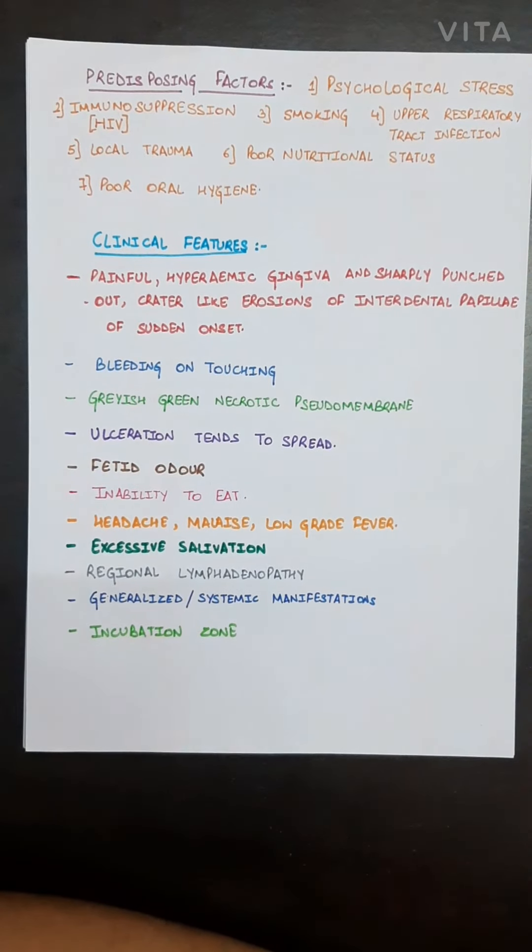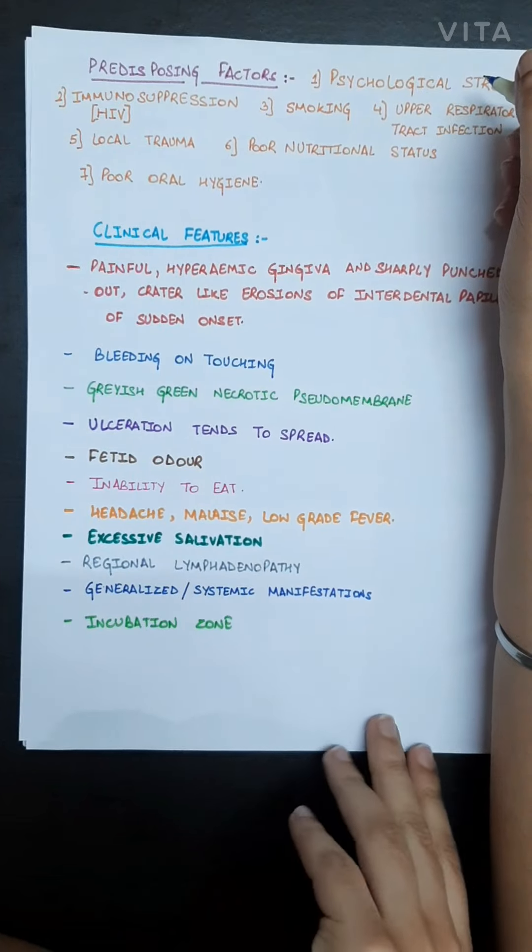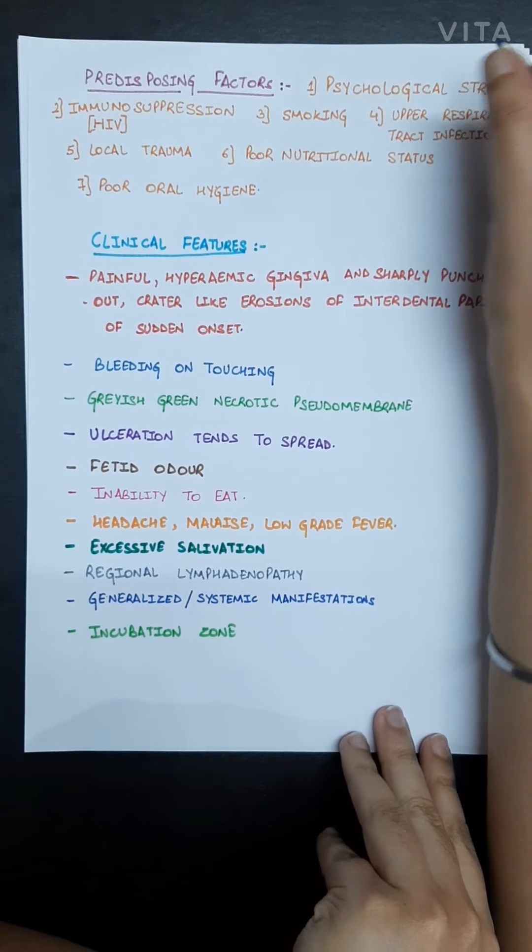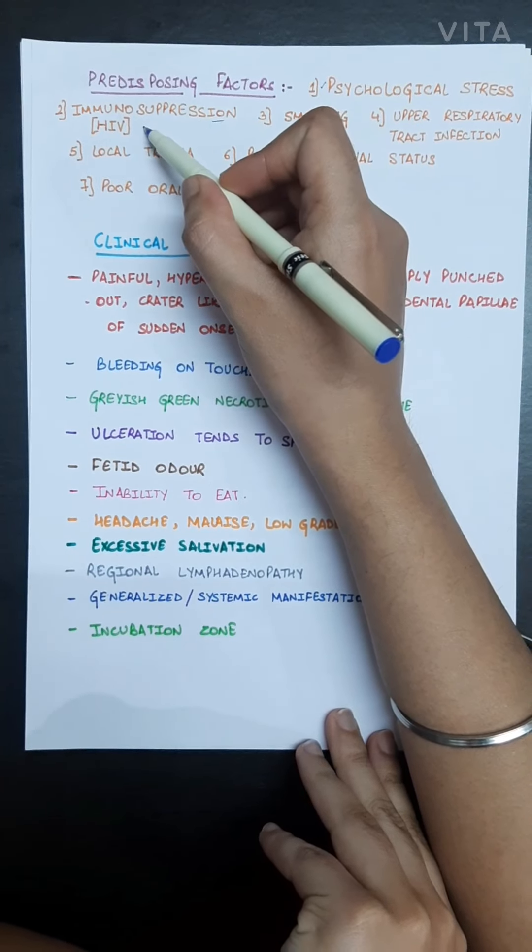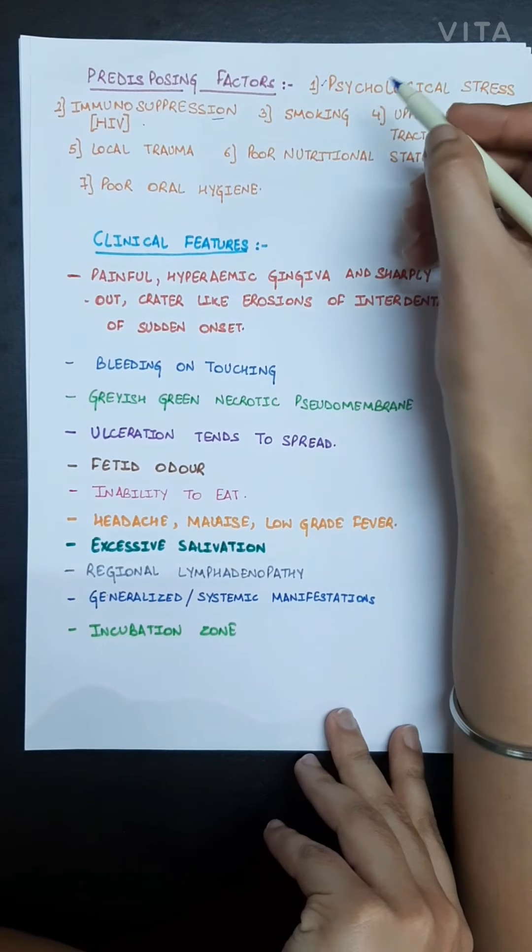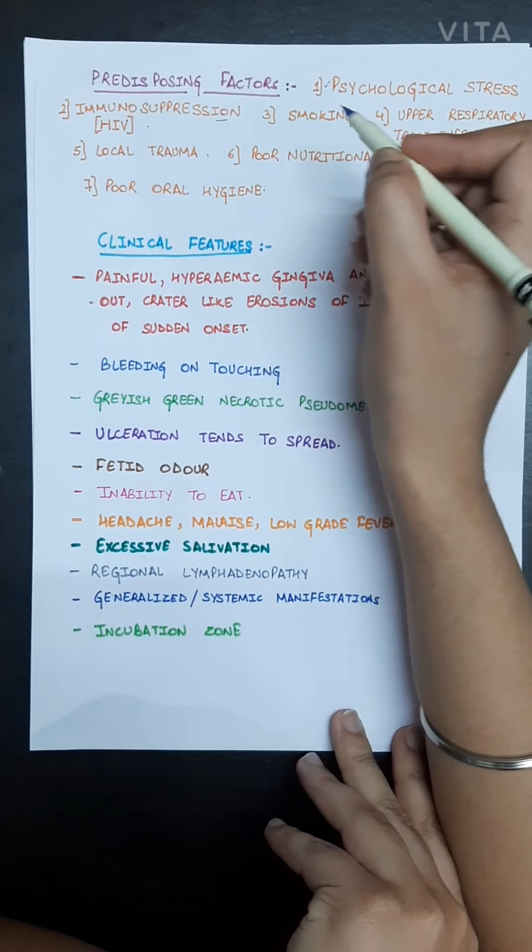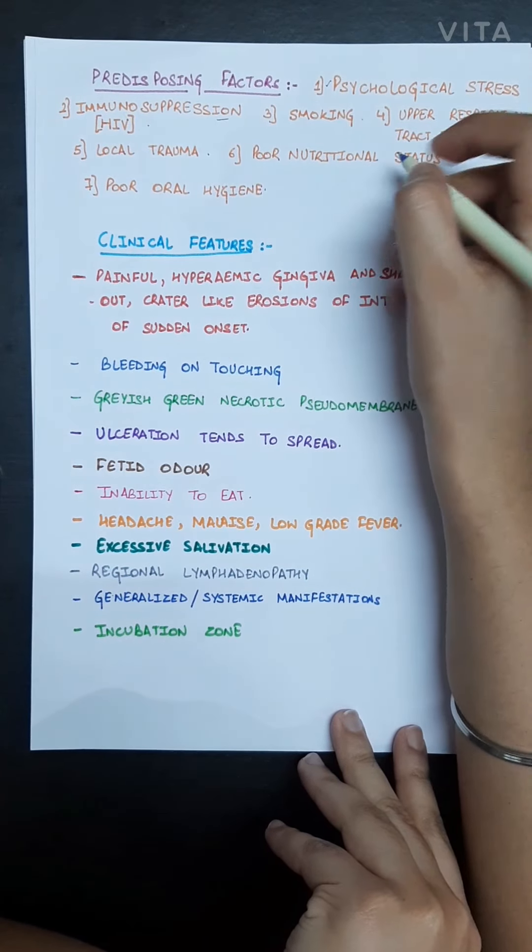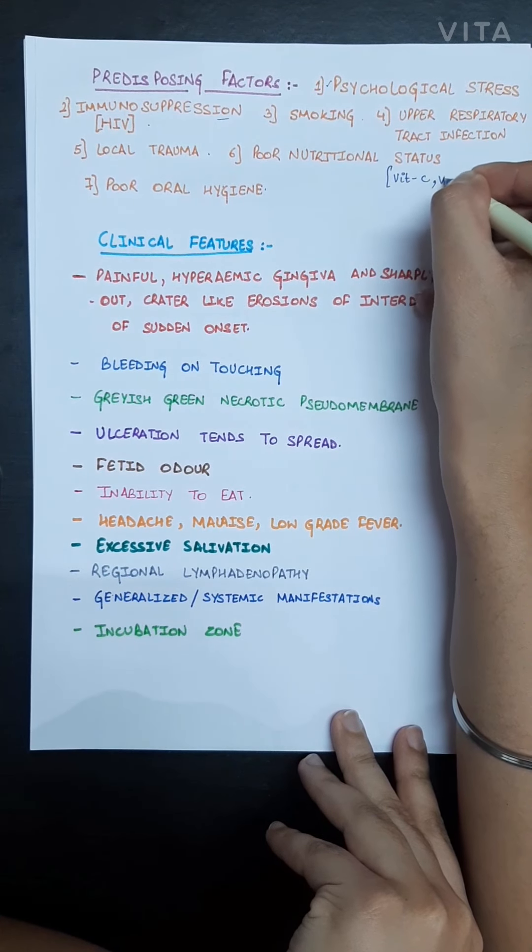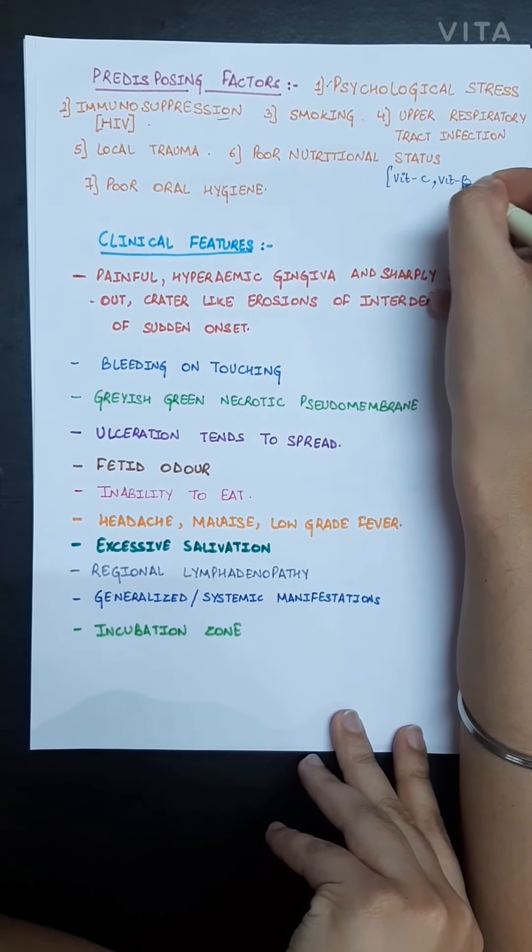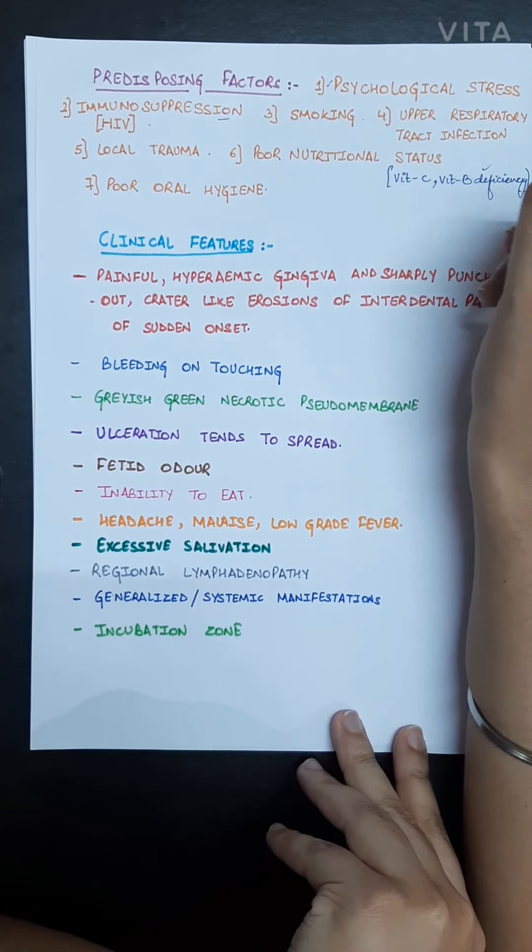Now the predisposing factors or risk factors for necrotizing ulcerative gingivitis are: psychological stress, immunosuppression such as in HIV positive patients, smoking, upper respiratory tract infection, local trauma, poor nutritional status such as vitamin C and vitamin B deficiency, and poor oral hygiene.